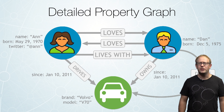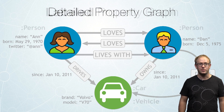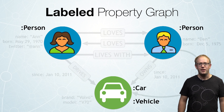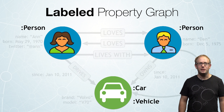We also call it a labeled property graph because we can have labels on each of our nodes. These labels are kind of like types — they allow you to indicate what type of node we are representing.